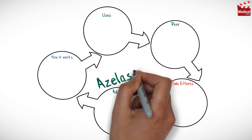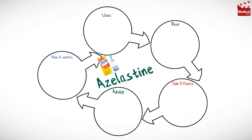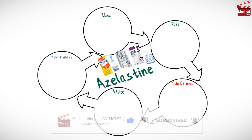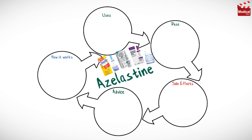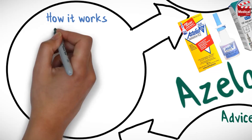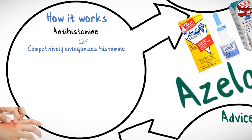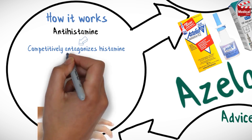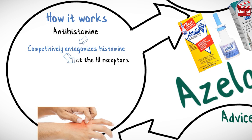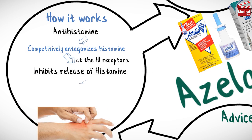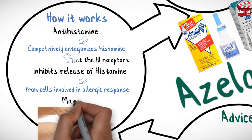In this video we'll briefly discuss what azelastine is and how it works, what it's used for, the dose, side effects, and contraindications and precautions. Azelastine is an antihistamine medication. It competitively antagonizes histamine at the H1 receptors and also inhibits the release of histamine and other mediators from cells involved in allergic response, such as mast cells.